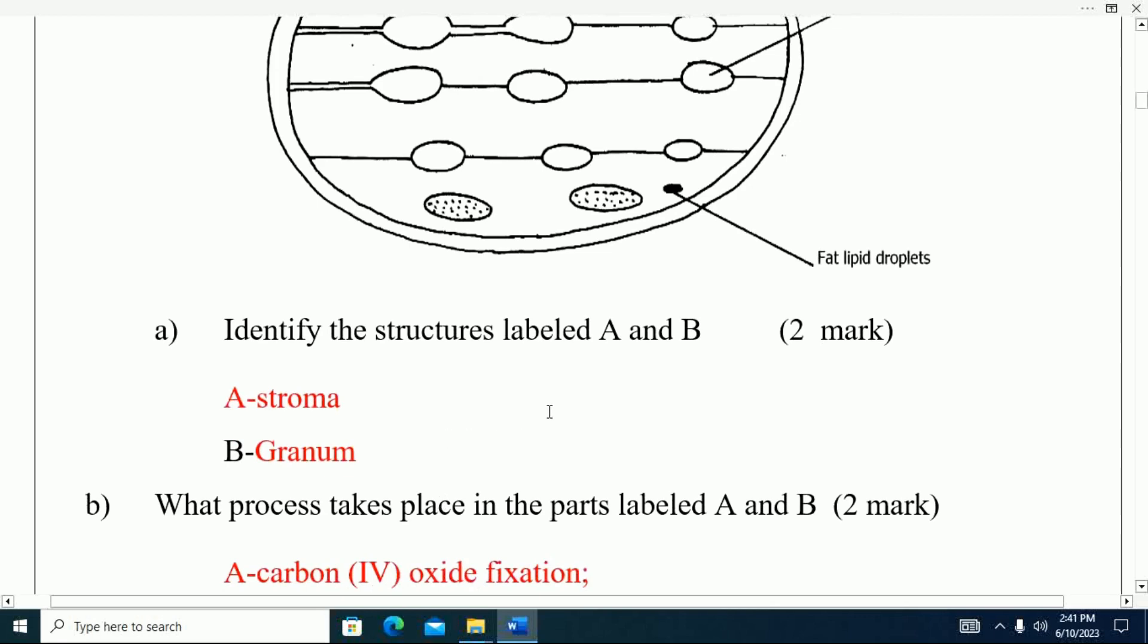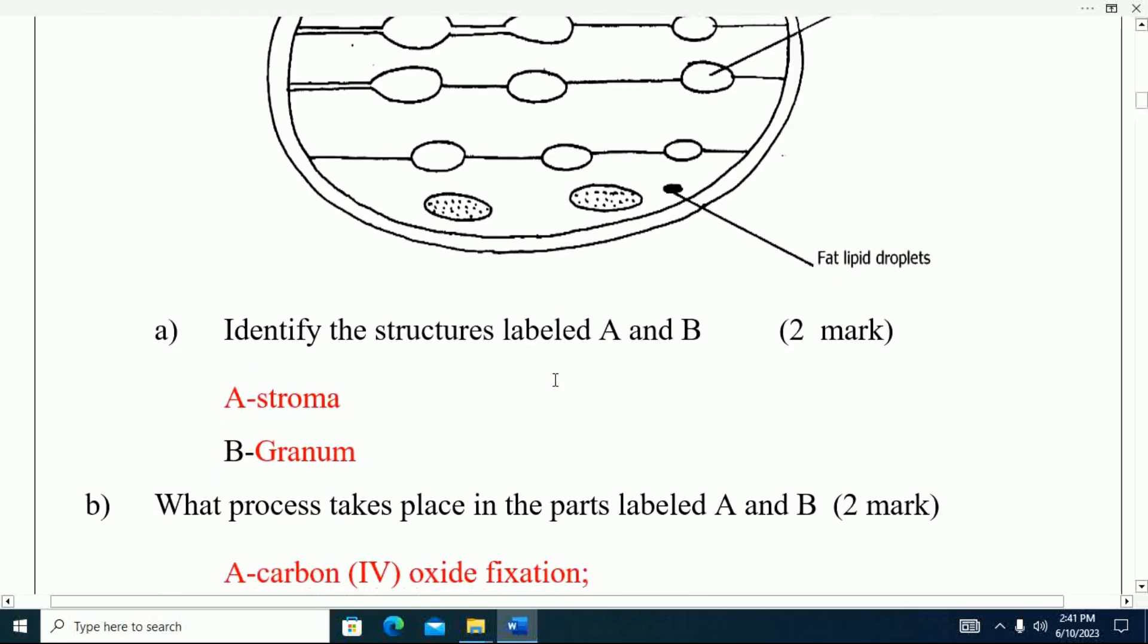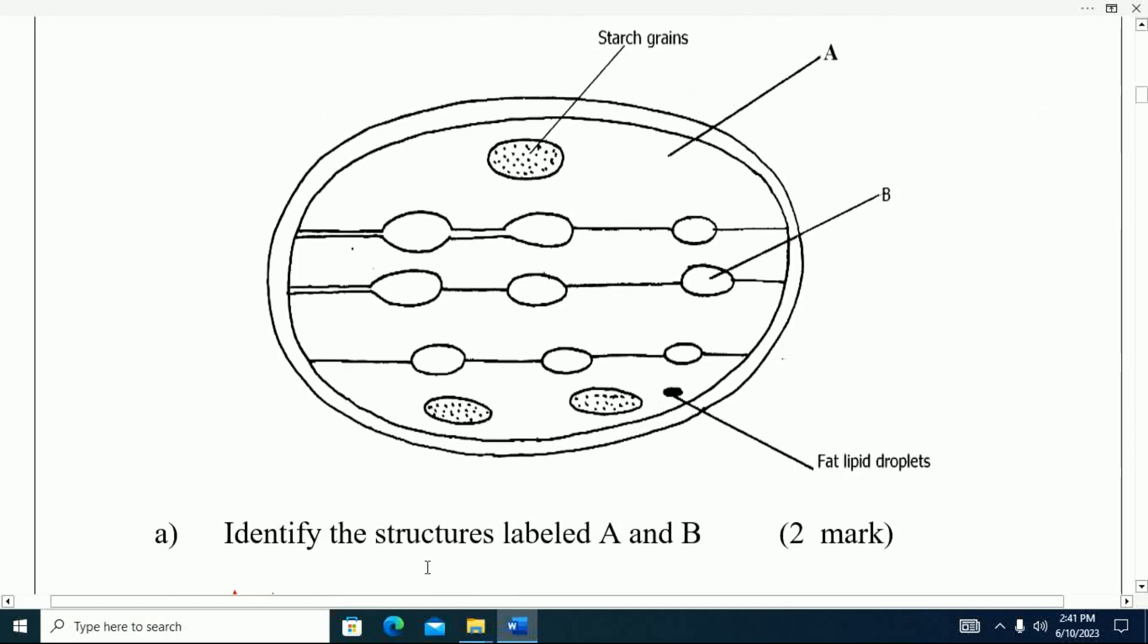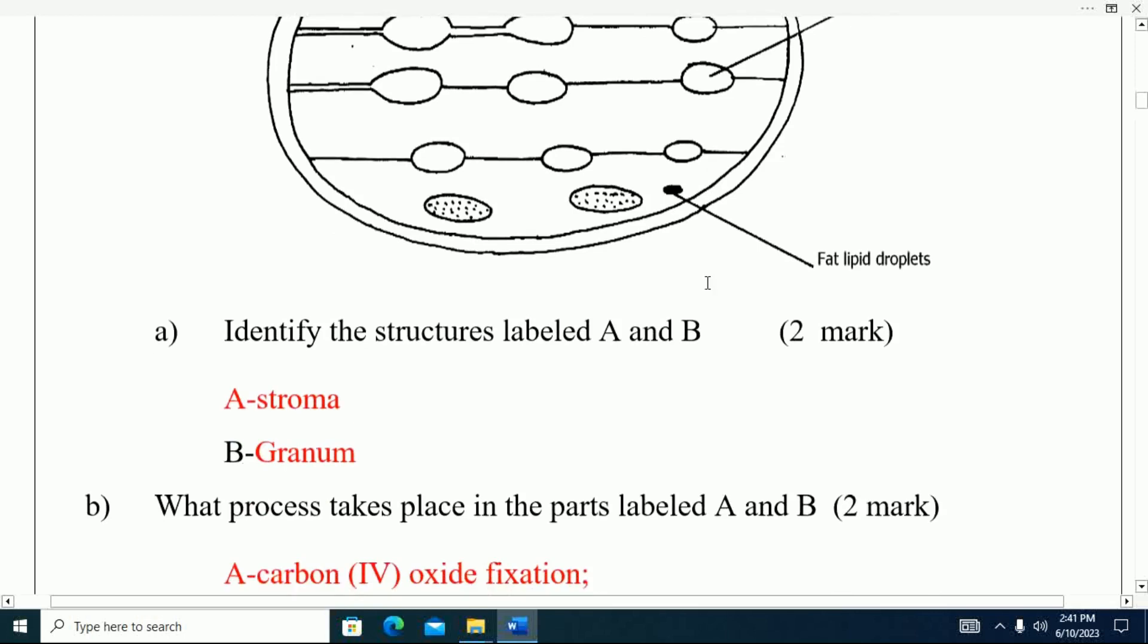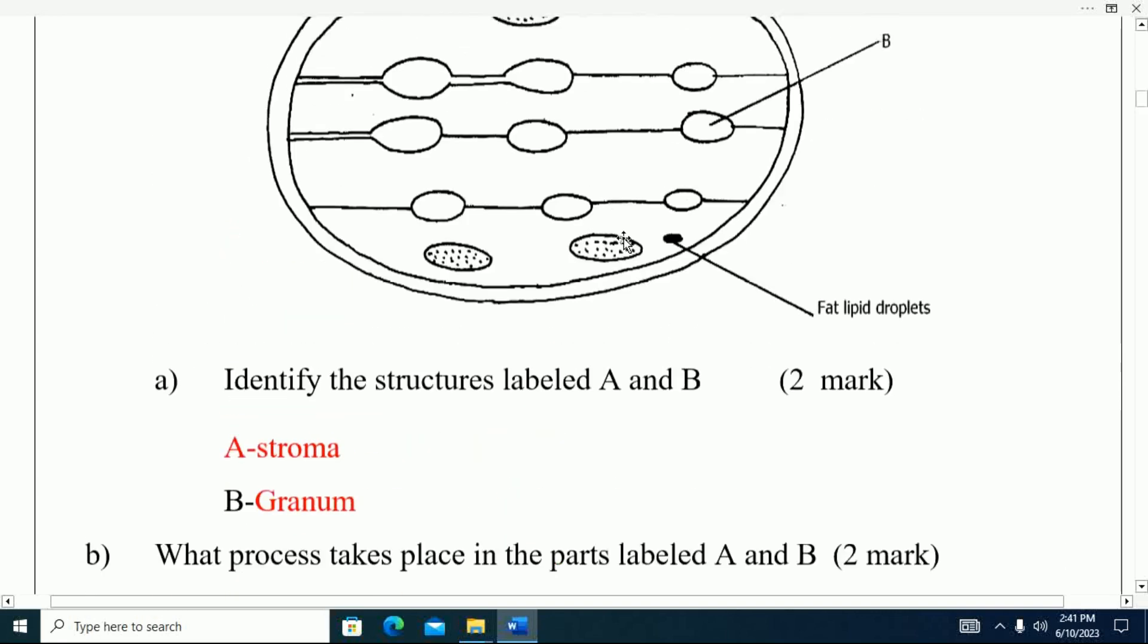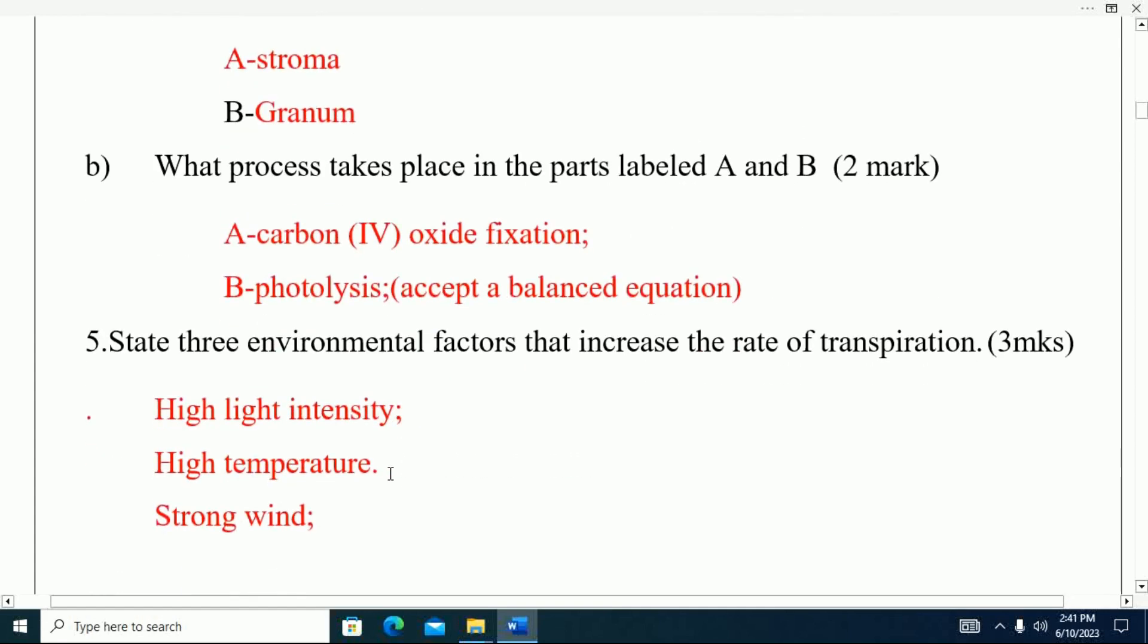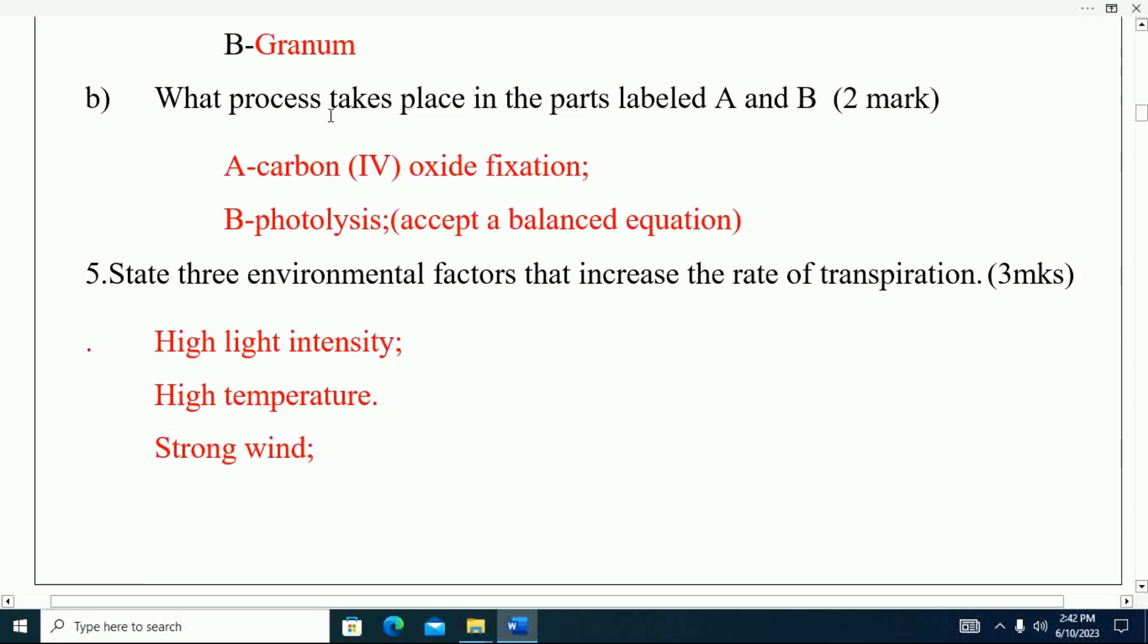You are told identify the structures labeled A and B. A is stroma and B is granum. Part B: What processes take place in the parts labeled A and B? In part A we have carbon dioxide fixation. B is photosynthesis.